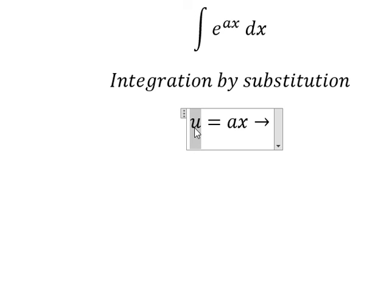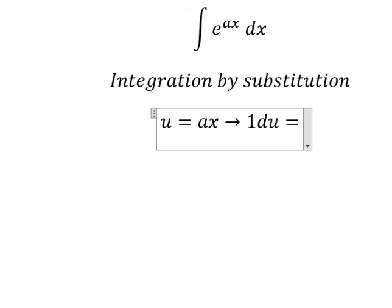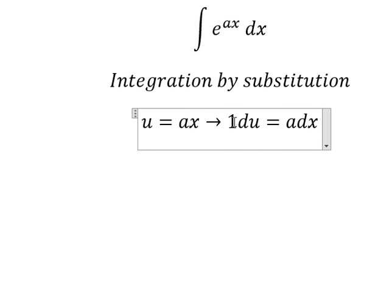First derivative of u, we have 1, and we put the u in here. First derivative of x, you got 1. So we have a dx. Because we don't have a, so we need to divide both sides by a.